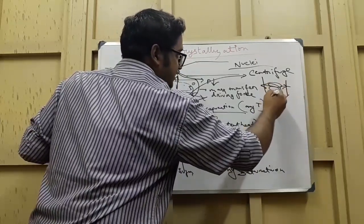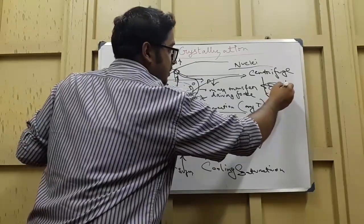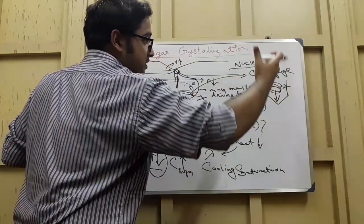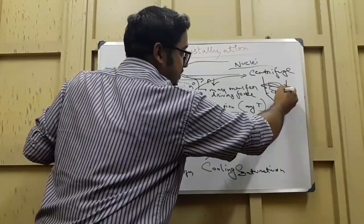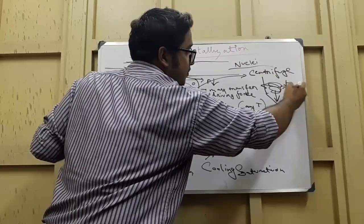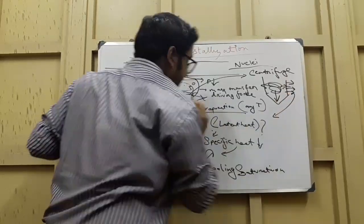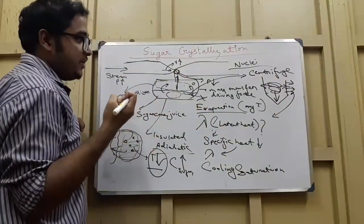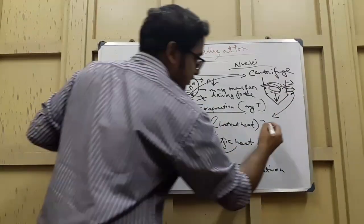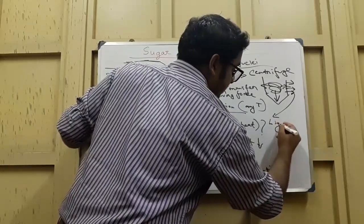What happens is the sugar crystals settle and the liquid due to its viscosity tends to move to the walls and are collected from there. This liquor that is collected after the sugar crystals have been removed, this is called the liquor.